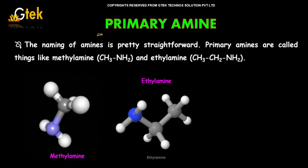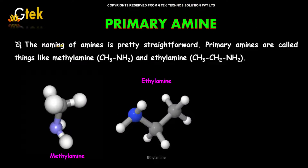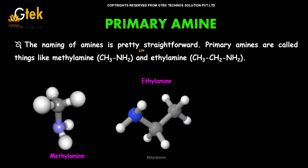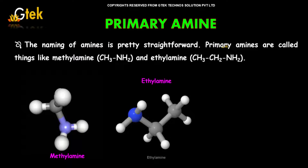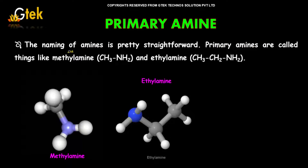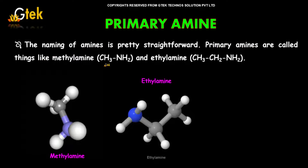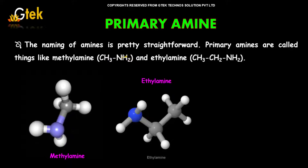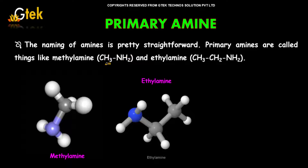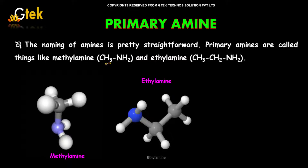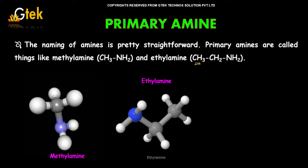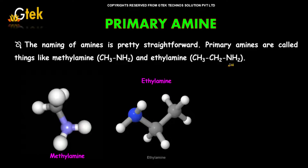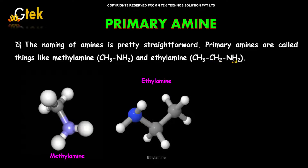Let's discuss primary amines. The naming of amines is pretty straightforward. Primary amines are called things like methylamine, CH3NH2 — where one hydrogen of ammonia is replaced by a hydrocarbon. For example, methane gives methylamine, and ethane gives ethylamine.